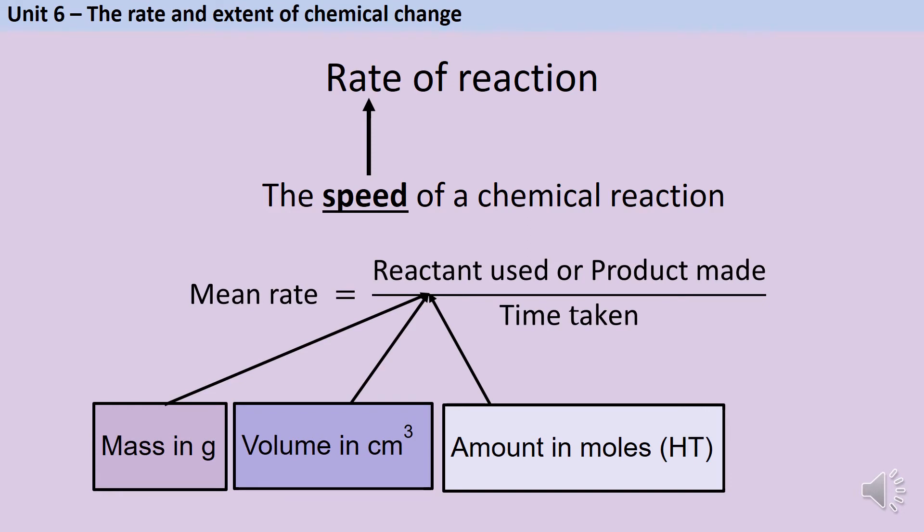The rate of a reaction is its speed, so when an exam question asks you about rate, they're asking you about how quickly it's going. We can express this either qualitatively or numerically. In order to calculate a number for how fast a reaction is going we need two pieces of information. We always need to know how long the reaction has been measured for, what the time is, and then we also need to know either how much reactant has been used up or how much product has been made.